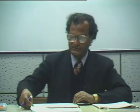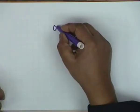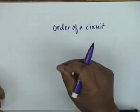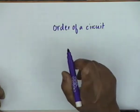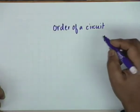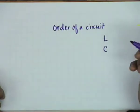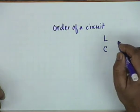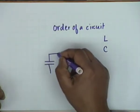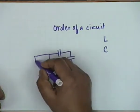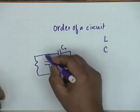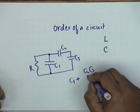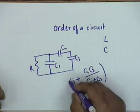The previous day I introduced terms like order of a circuit. A first order circuit is one which has effectively one energy storage element — either one inductor or one capacitor. There may be more than one capacitors or inductors trivially connected to each other which behave as a single energy storage element. For example, three capacitors connected together with a resistance behave like a single capacitor.